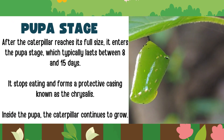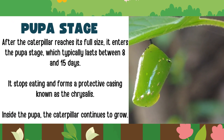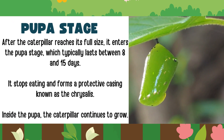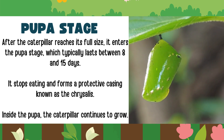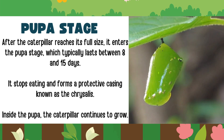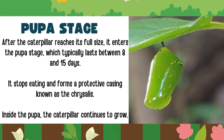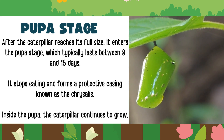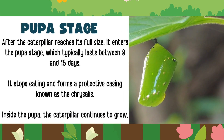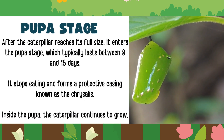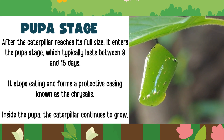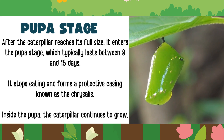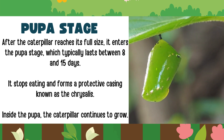After it has eaten enough, the caterpillar enters the pupa stage. It stops eating and forms a protective casing known as the chrysalis. Inside the chrysalis, the caterpillar continues to grow. The pupa stage lasts between 8 to 15 days.